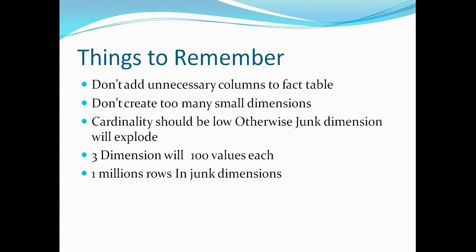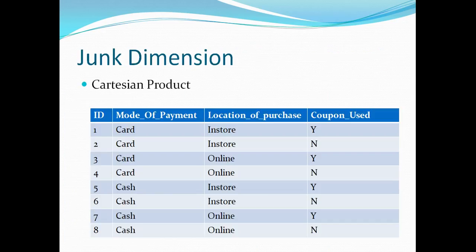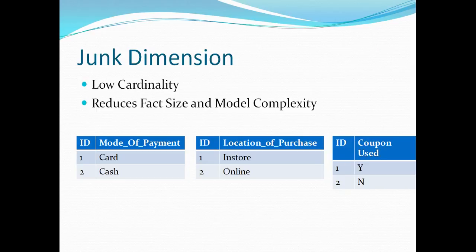We usually load junk dimensions on a practical feasibility basis. For example, you cannot purchase something online with cash, so we will not even load that row. Instead of having eight rows, we will have only six rows. You load only the practical and feasible values from real-world scenarios. The two things junk dimensions solve are: reducing the fact table size and reducing model complexity. When creating a junk dimension, ensure all dimensions joined together have low cardinality and a small number of distinct values.